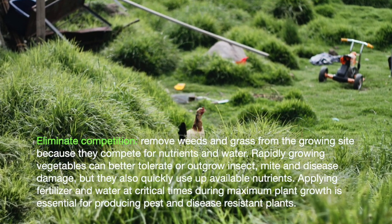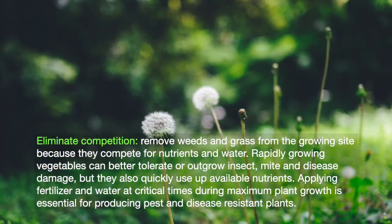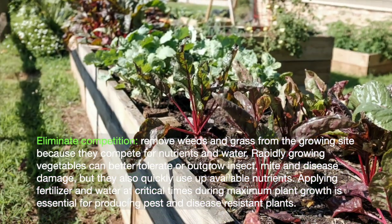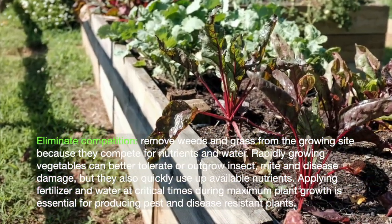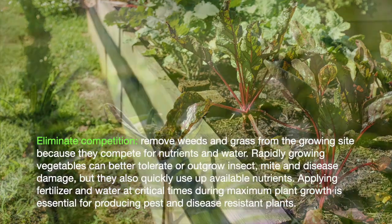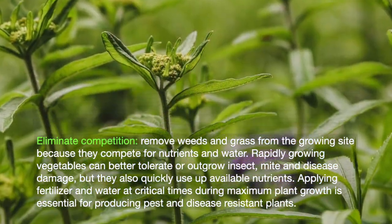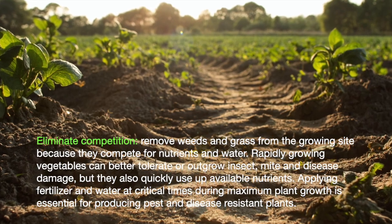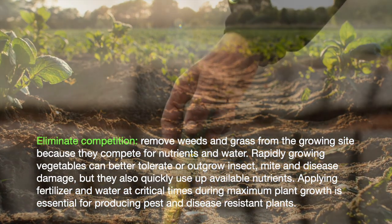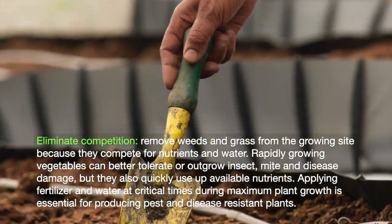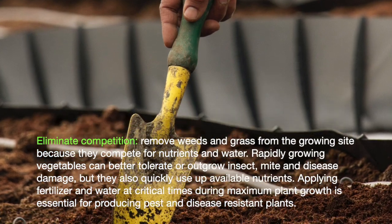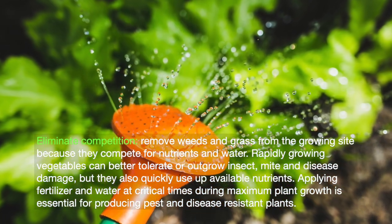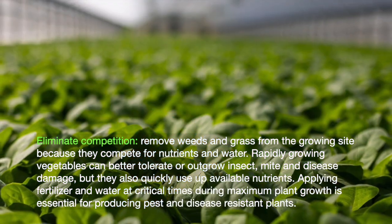Remove weeds and grass from the growing site because they compete for nutrients and water. Rapidly growing vegetables can better tolerate or outgrow insect, mite and disease damage, but they also quickly use up available nutrients. Applying fertilizer and water at critical times during maximum plant growth is essential for producing pest and disease resistant plants.